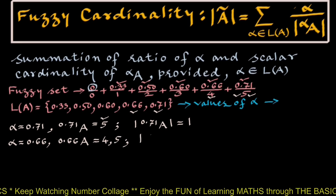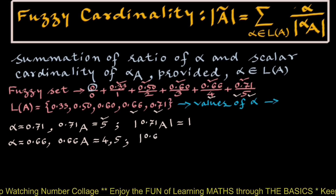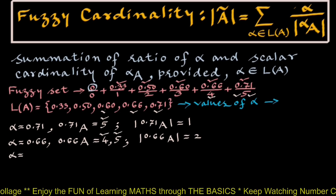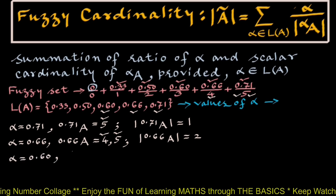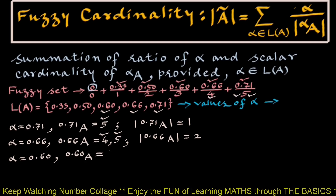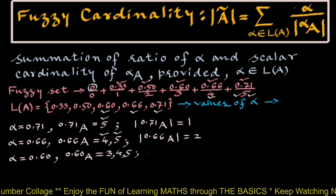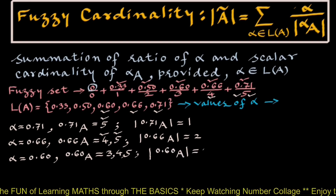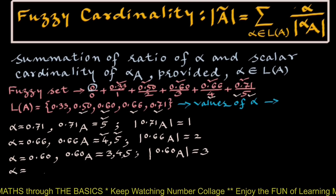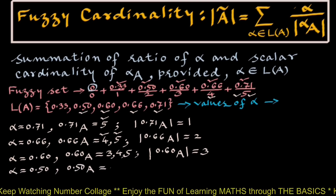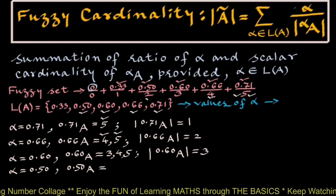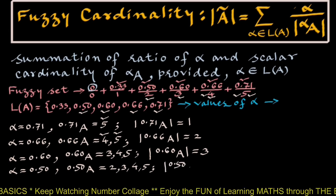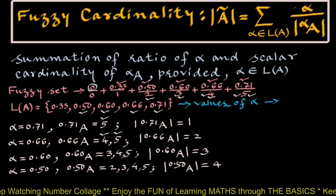Scalar cardinality of 0.66-cut A contains 2 elements: 4 and 5. For alpha equals 0.60, the 0.60-cut A will have 4 elements, and scalar cardinality of 0.60-cut A will have 3 elements. For alpha equals 0.50, the 0.50-cut A will contain 4 elements: 2, 3, 4, and 5. So scalar cardinality of 0.50-cut A will contain these 4 elements.